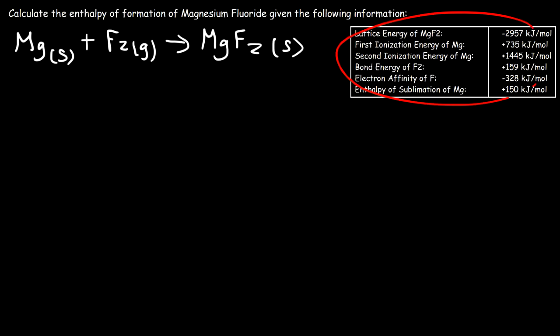We need to use this information in such a way where we can find the enthalpy of formation of magnesium fluoride. So we need to write the reactions that correspond to the lattice energy and the ionization energies of Mg, and adjust them according to Hess's law so that we can calculate the enthalpy for that reaction.